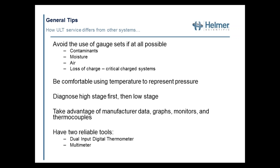We're going to talk about being comfortable using temperature to represent pressure. In refrigeration, a specific temperature corresponds to a specific pressure — that's true with every refrigerant in the field. First, diagnose your high stage, or first stage, which must be operating before the second stage will start. Then look at the low stage and utilize the heat exchanger as your main troubleshooting point for both stages. Take advantage of manufacturer data, graphs, monitors, and thermocouples provided in the units. The tools you'll need are a reliable digital thermometer such as a Fluke 52 or omega meter, and a multimeter or amp meter.